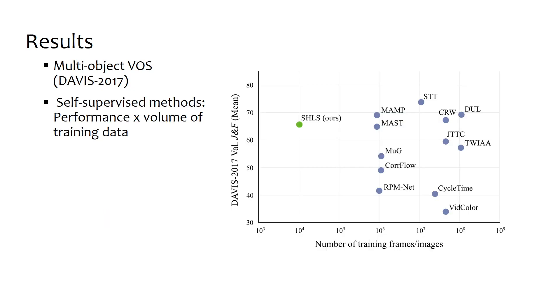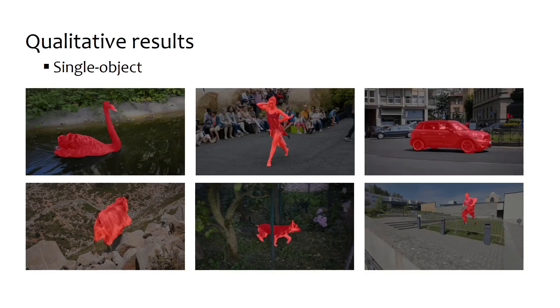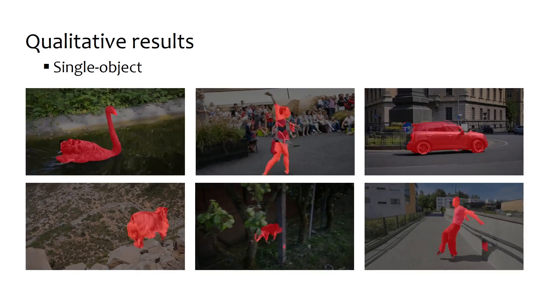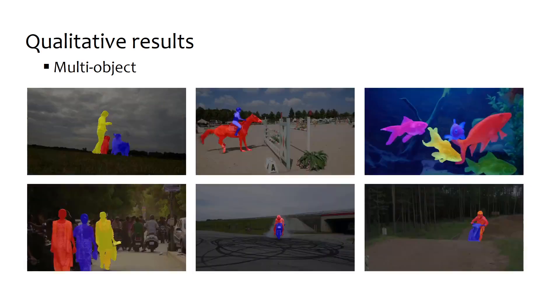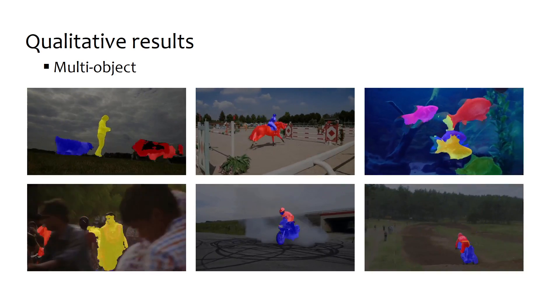As a result, SHLS is competitive with state-of-the-art self-supervised VOS methods, although it's been trained with only still images, at least two orders of magnitude less data than competitors. Our method works for both single-object segmentation and multi-object segmentation.